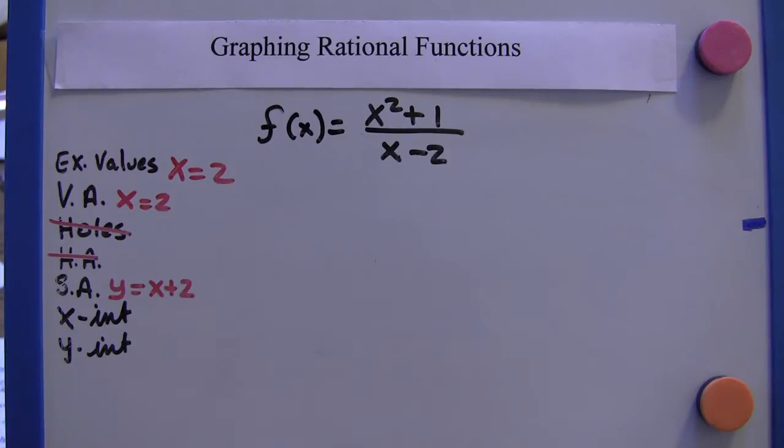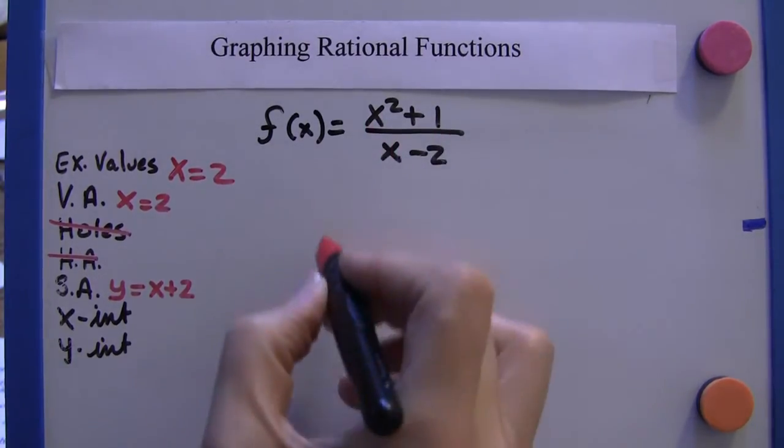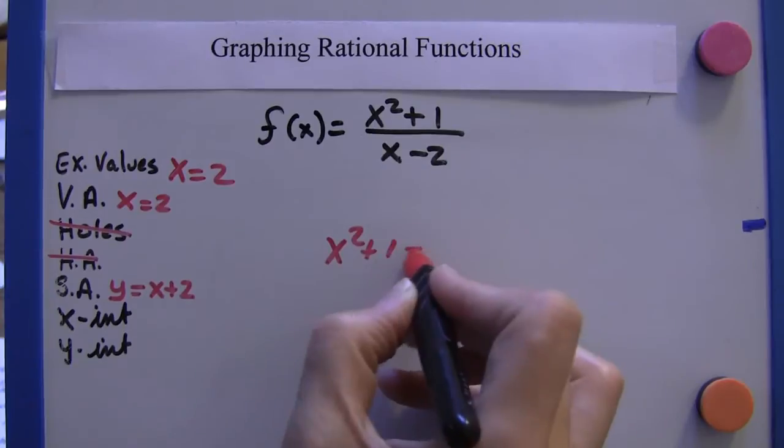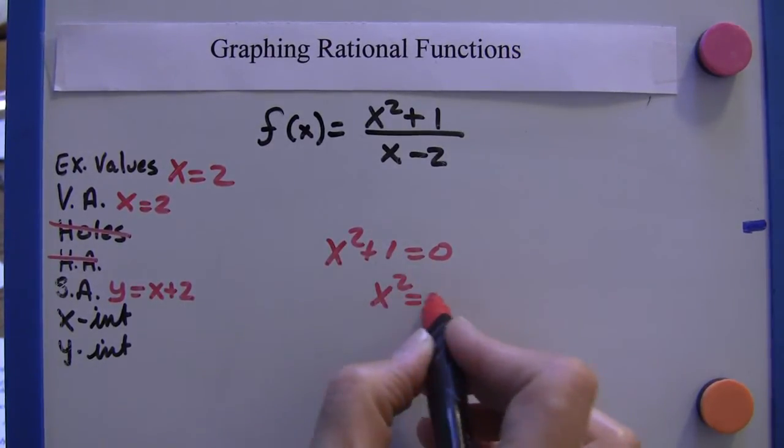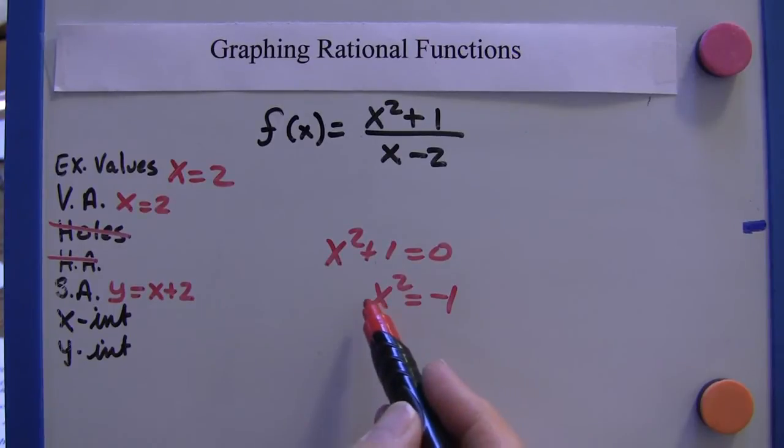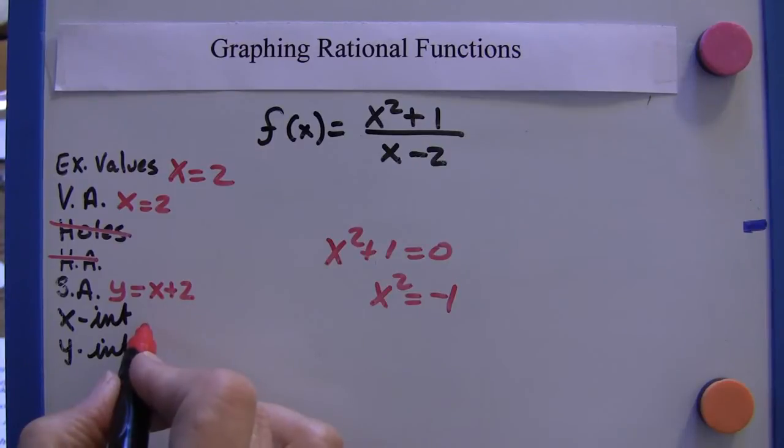Well, for the x-intercept, we set the numerator to zero. So we can go x squared plus one equals zero. We subtract one from both sides. We get x squared is negative one. There are no real values here that satisfy this. So there are no x-intercepts.